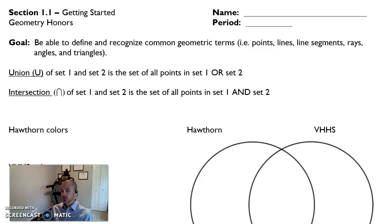And for intersection we use a symbol that looks like an upside down U and we call that the intersection. And it is where sets one and two overlap. And it's set one and set two. Things that are in set one and set two.